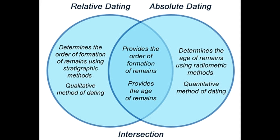The following are the major methods of absolute dating. Radiometric dating — this technique solely depends on the traces of radioactive isotopes found in fossils. The rate of decay of these elements helps determine their age, and in turn the age of the rocks. Amino acid dating —